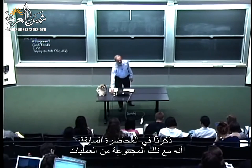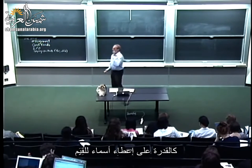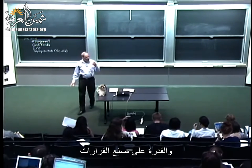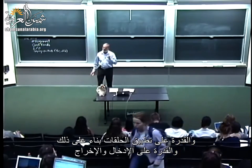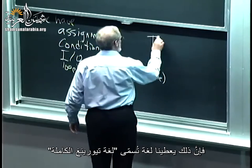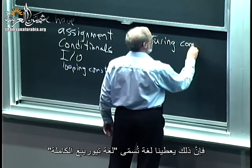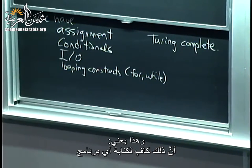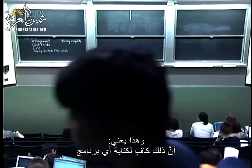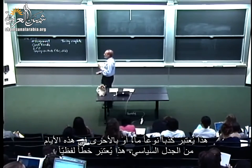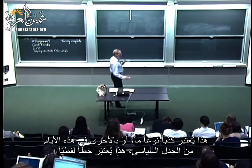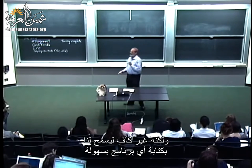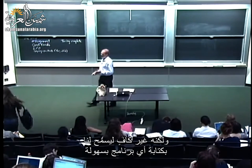One of the things we said last time was, with that set of things — the ability to give names to values, the ability to make decisions, the ability to loop as a function of that, the ability to get things in and out — we said that that actually gave us a language that we said was Turing complete. And that meant, in English, that this was enough to write any program. It is technically correct, but it's not enough to allow us to easily write any program.